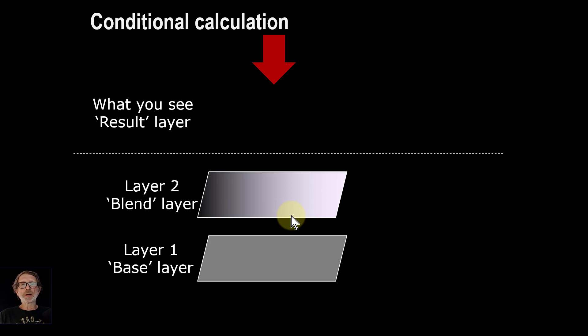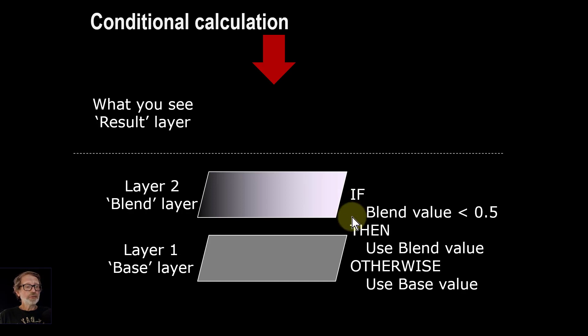You can also have conditional calculations, and these happen in particular in one group. And so if you've got, say, this is gray and this is a blend here, what you could say is if the blend value is less than a half, then use the blend value.